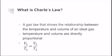The formula for Charles' Law is V1 over T1 is equal to V2 over T2, which means that the quotient of the initial volume and temperature is equal to the quotient of the final volume and temperature.